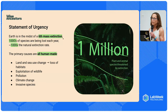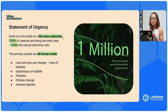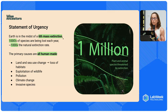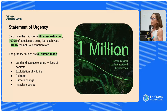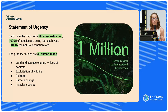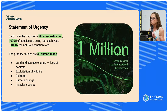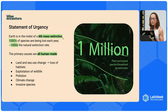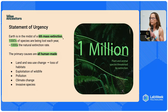We have now allowed this behavior to go on for so long that we are in an urgent situation. We're now in the midst of a sixth mass extinction, with an unprecedented loss in biodiversity. It's estimated that thousands of species are going extinct every year — roughly 1,000 times the natural extinction rate — and that one million species will become extinct in the coming decades. This is the only mass extinction attributable to human activity, with the primary causes being land and sea use change leading to loss of habitats, exploitation of wildlife, pollution, climate change, and invasive species.